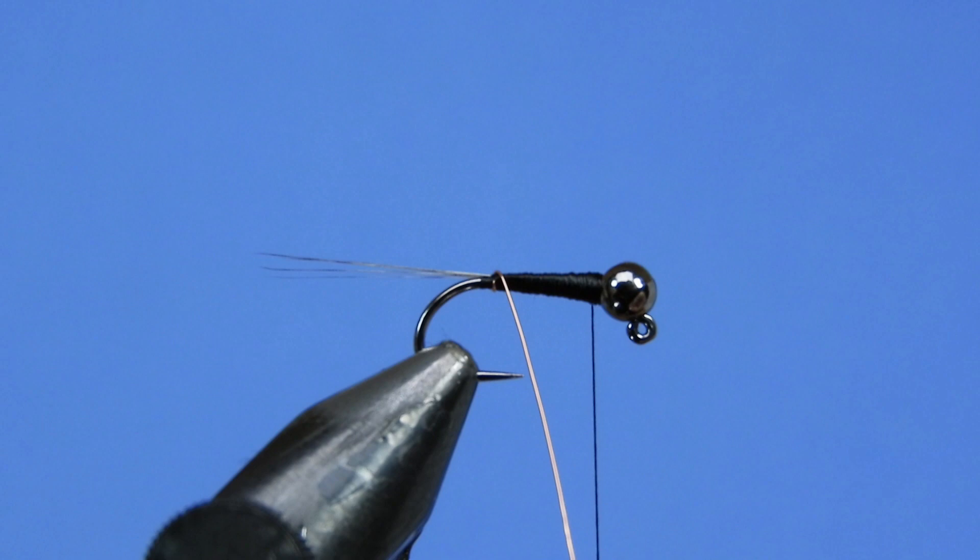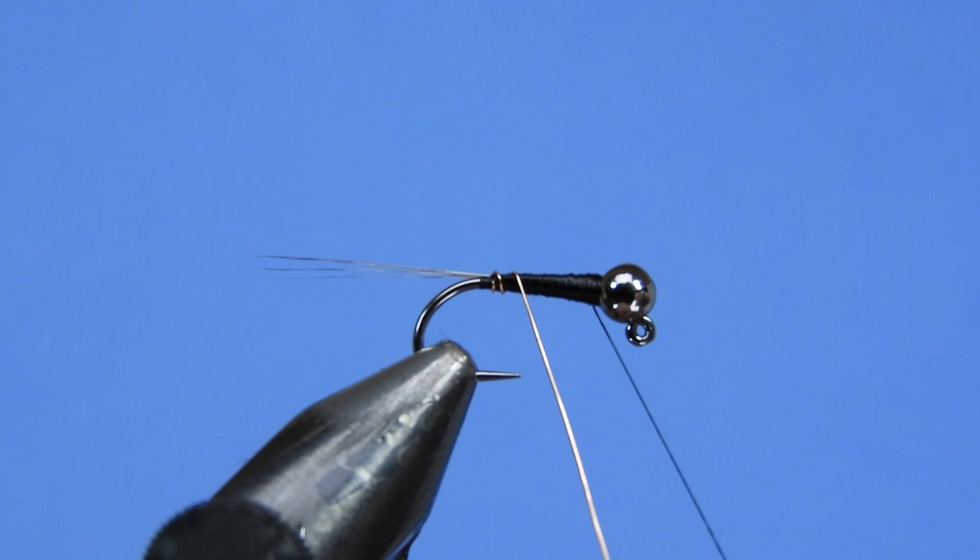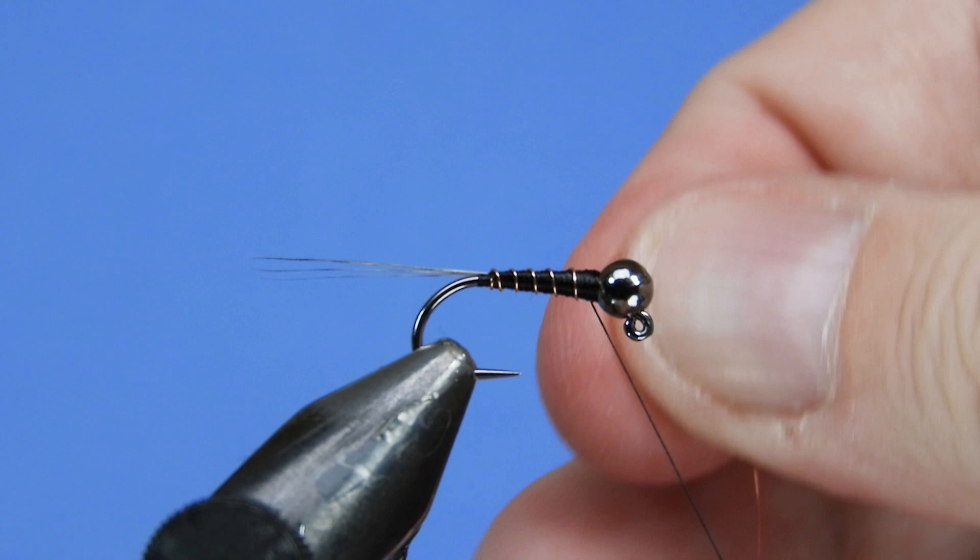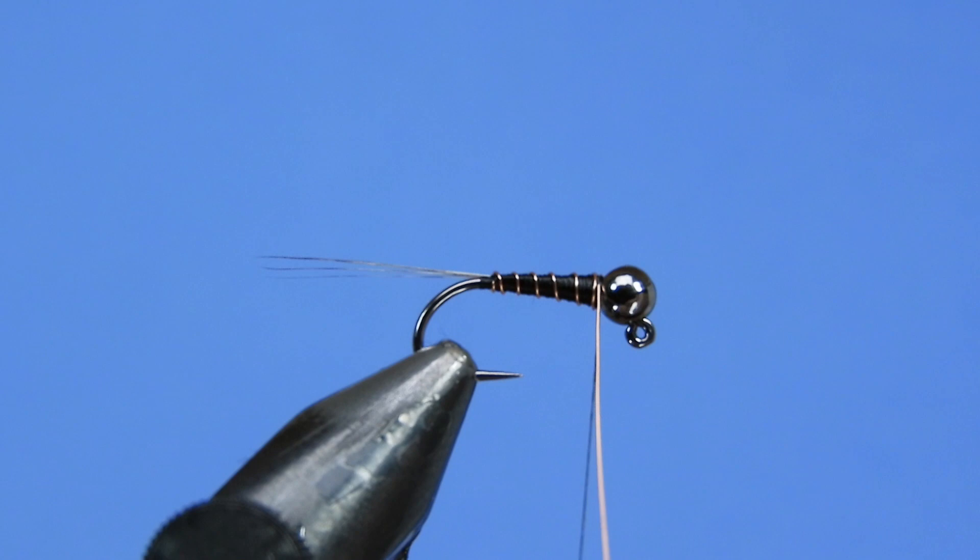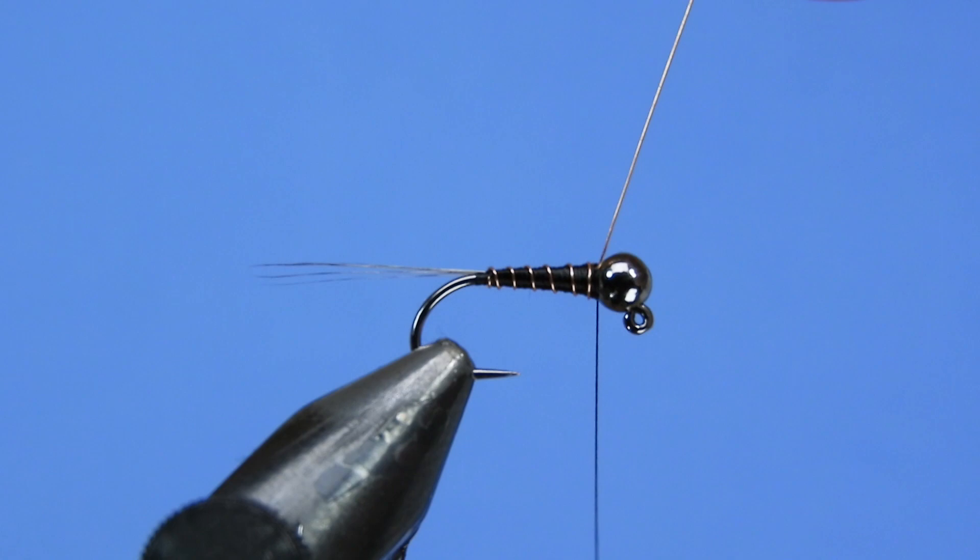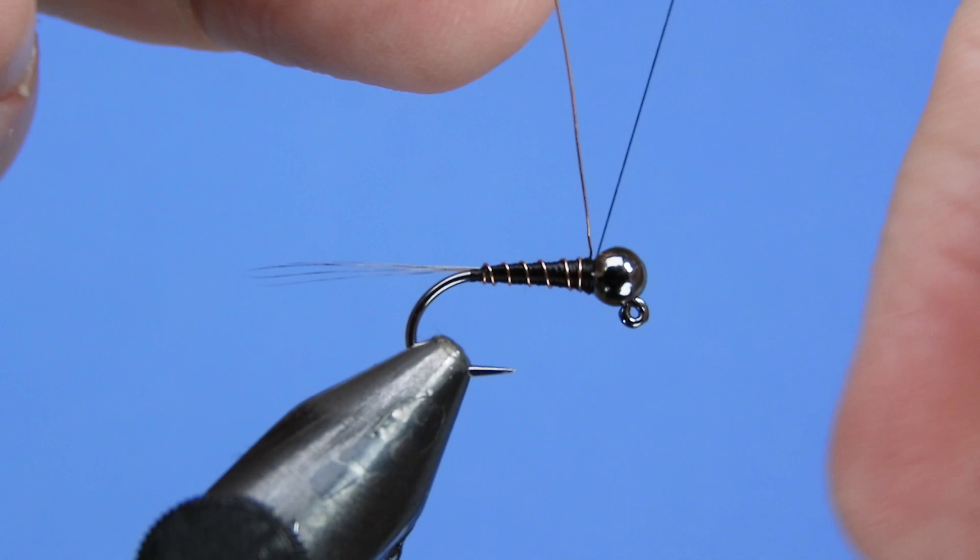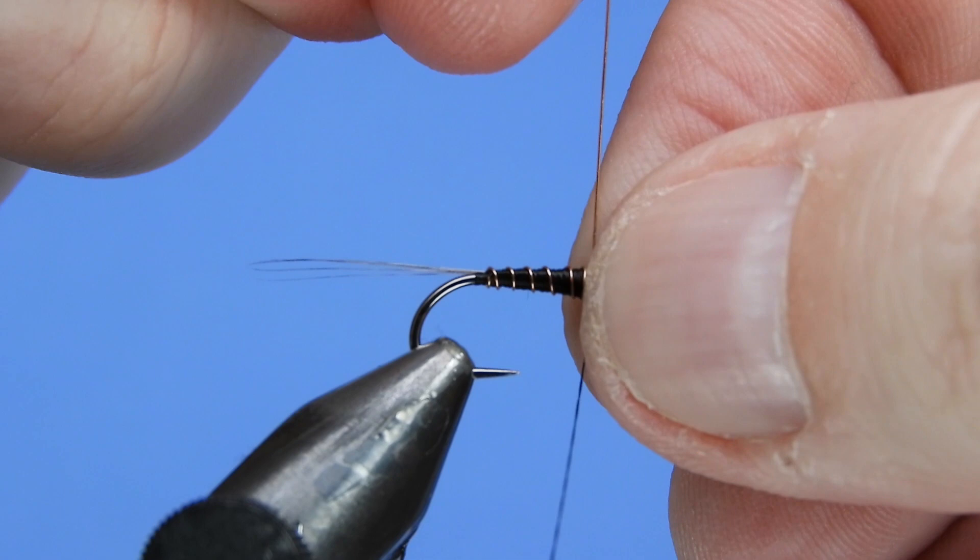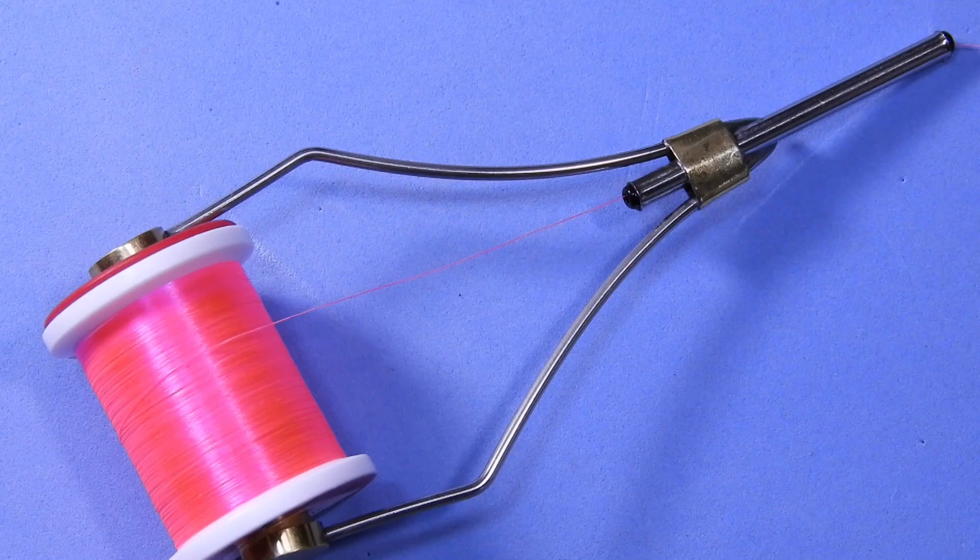So we're going to take our wire and we're going to twist it up as a ribbing, and I like to go opposite direction of how I tied in my thread. And we'll just put four or five ribs in there. We'll tie that off right behind the bead and we'll give that a few wraps. Make sure you go on both sides of that thread so that it gets locked in place. We'll pull that tight, add another wrap in here, pull it tight and give it a couple wiggles to helicopter it off. You get a nice clean break that way.